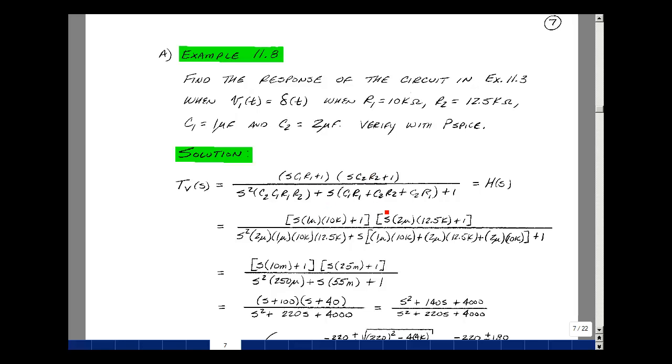Let's plug in the values of the R's and C's. So I've got 1 microfarad, 10k, 2 microfarads, 12.5k, 2 microfarads, 1 microfarad, 10k, 12.5k, 1 microfarad, 10k, 2 microfarads, 12.5k, 2 microfarads, and then 10k. You multiply this out, you get 10 milli. Multiply this out, you get 25 milli. This multiplied out gives me 250 micro. And all of this multiplied and added is equal to 55 milli.